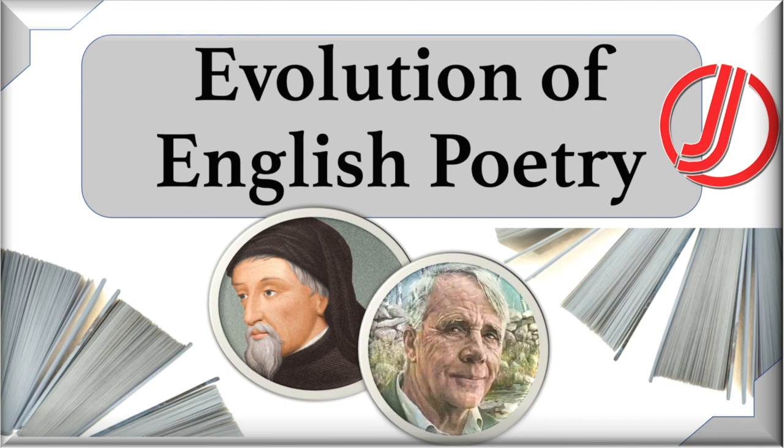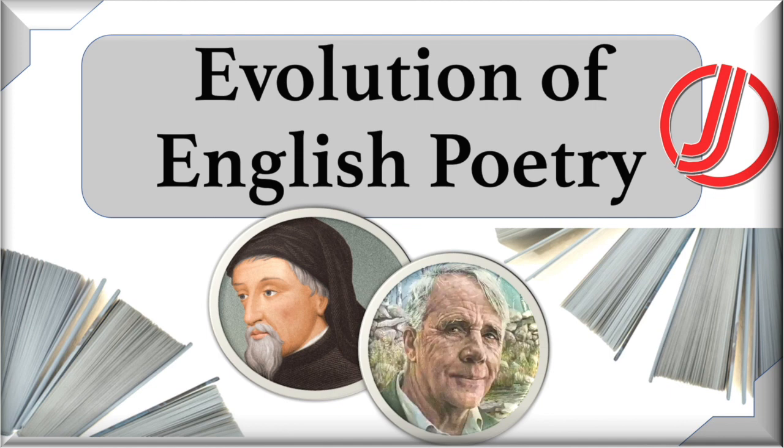Poetry is a form of literature that uses aesthetic and often rhythmic qualities of language, such as sound symbolism, meter, rhyme, and rhythm. It is there to evoke meanings in addition to, or in place of, prosaic ostensible meaning. A poem is a literary composition written by a poet using these principles. So let us see what is the history of poetry and how did poetry evolve.